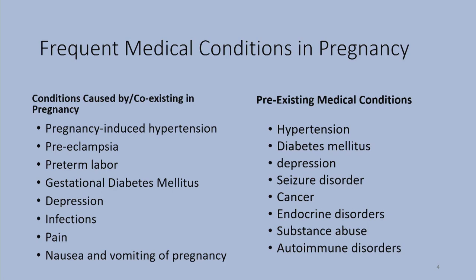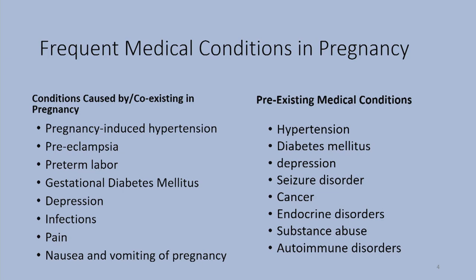I wanted to start first by talking about the medical conditions that occur in pregnancy. The conditions that are caused by or coexisting in pregnancy include pregnancy-induced hypertension, preeclampsia, preterm labor, gestational diabetes, depression, infections, pain, and nausea and vomiting of pregnancy. This is not all-inclusive, but this is a fair number.